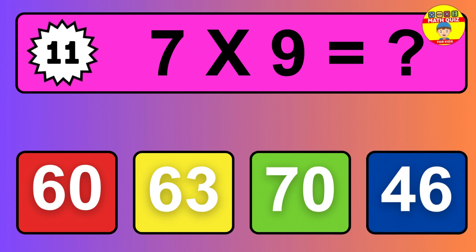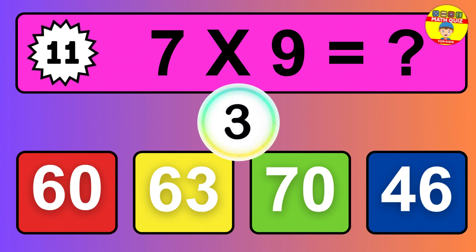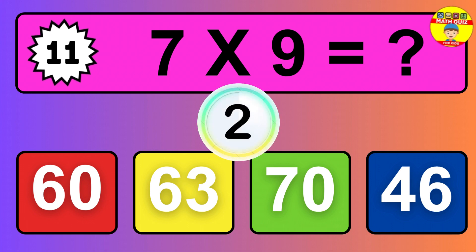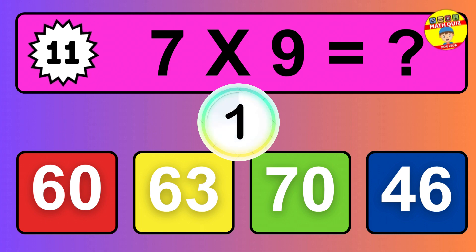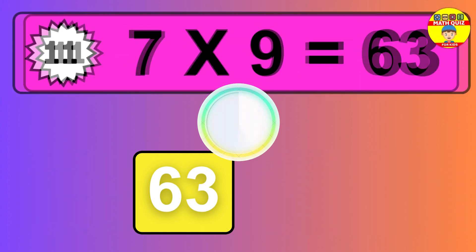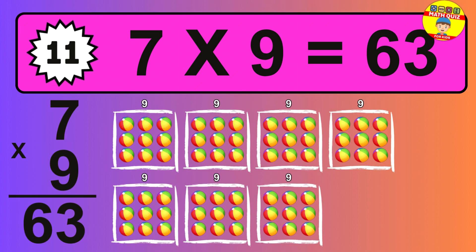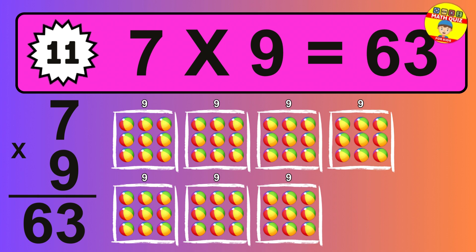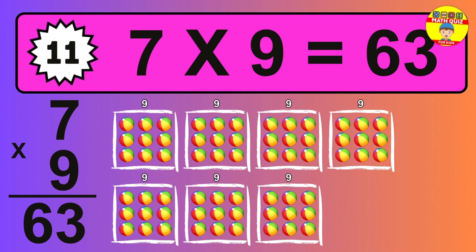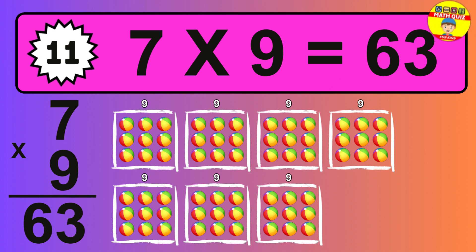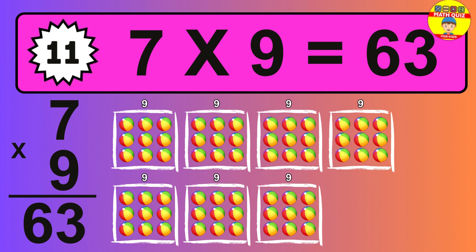Question eleven. Seven times nine equals what? So the answer is seven times nine is 63. To calculate, we have seven groups with nine balls each one. So how many balls do we have? 63 balls.